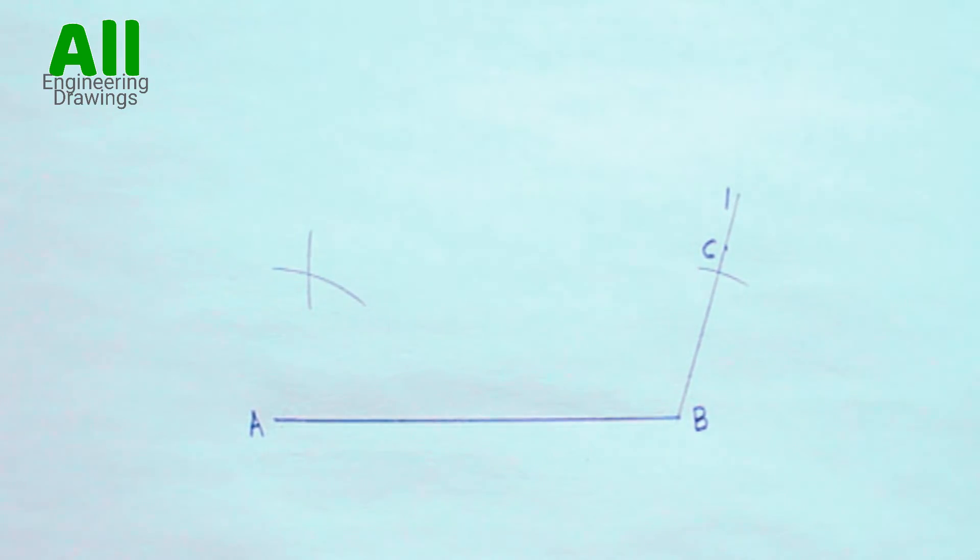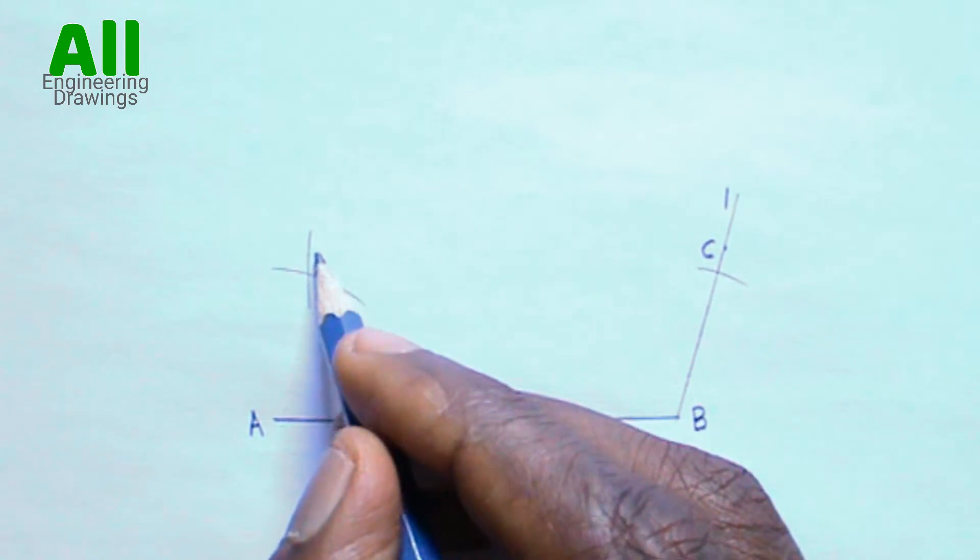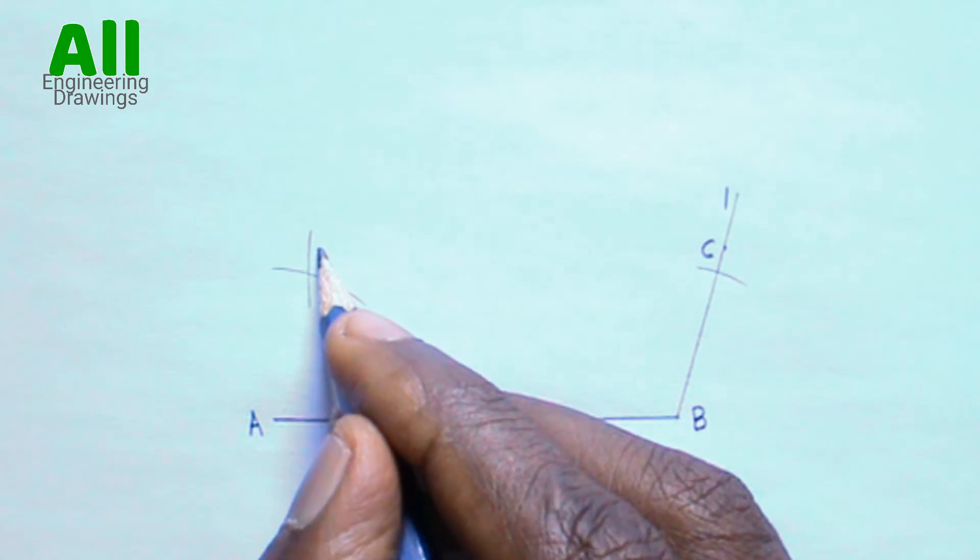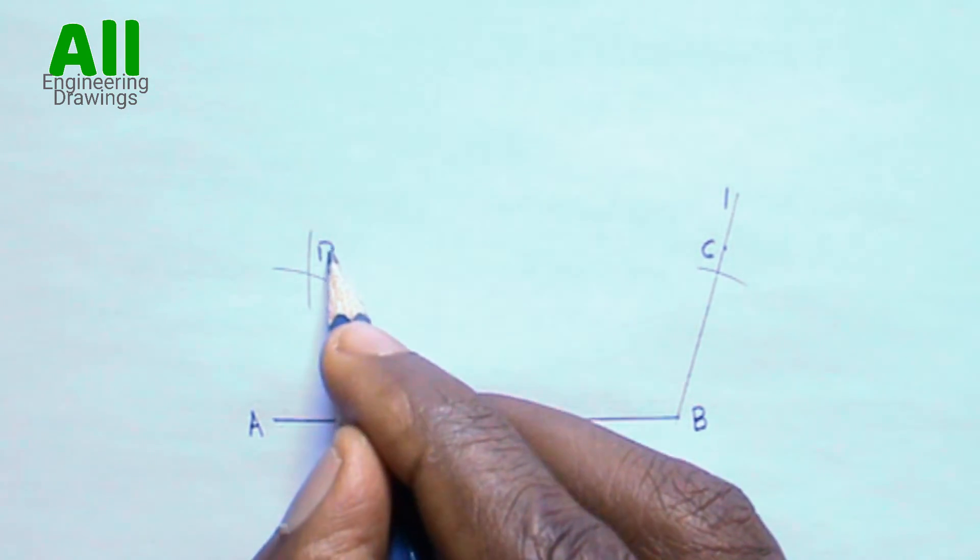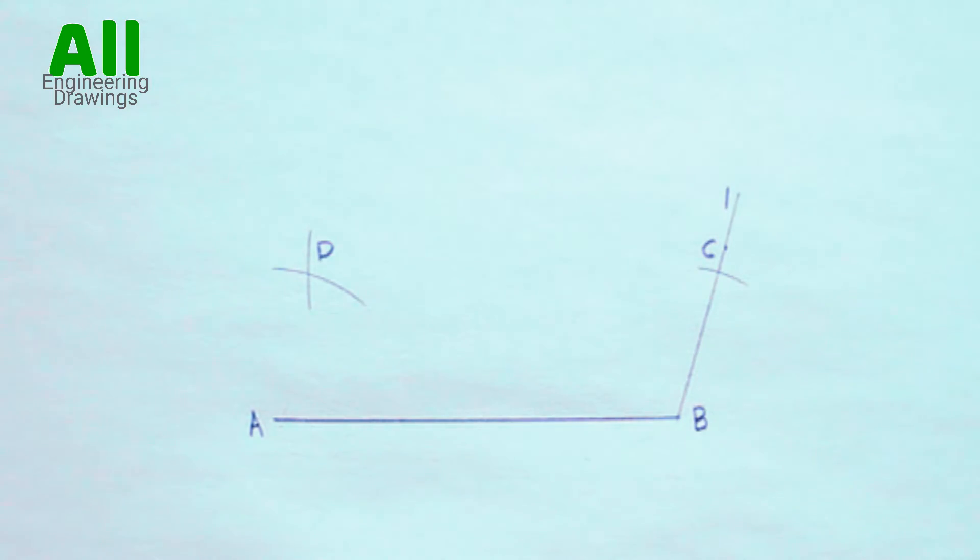Now label the point where the arcs intersect D. Now complete your parallelogram.